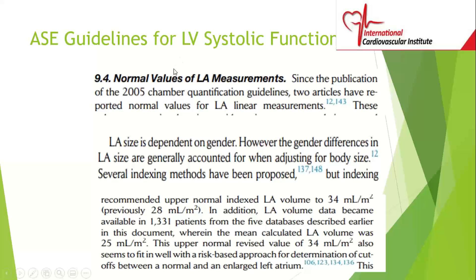Left atrial volume is not just a volumetric measurement — it's always an index measurement, adjusted for body surface area. The upper limit for the ratio of volume is about 34 mls per meter squared. Previously it was 28, so you need to keep up with the guidelines — 34 is now the upper limit, not 28.